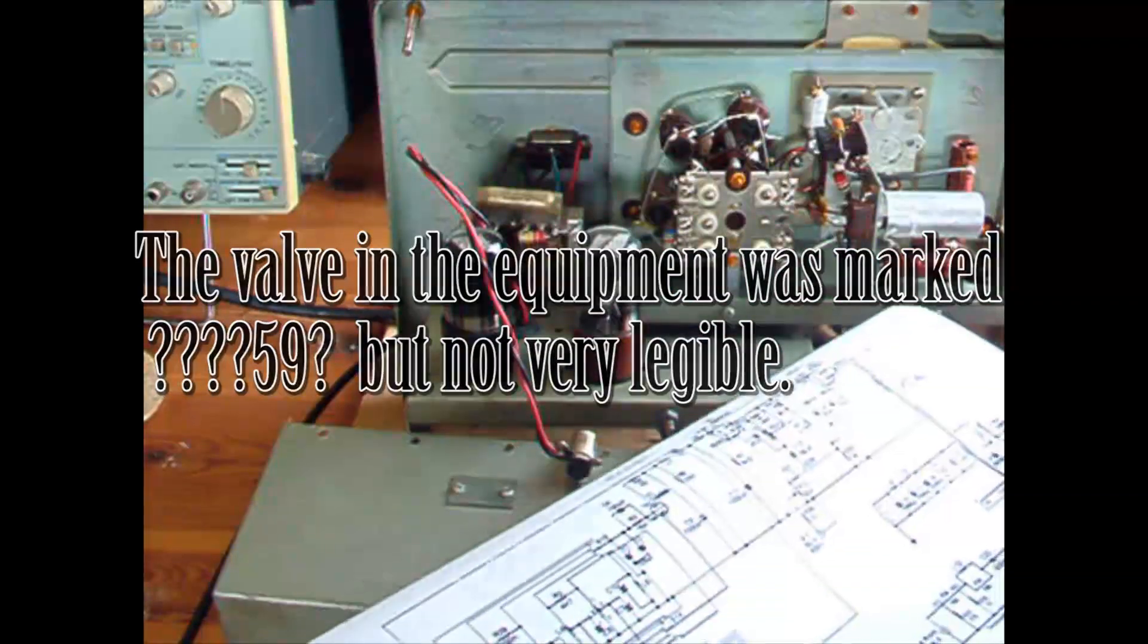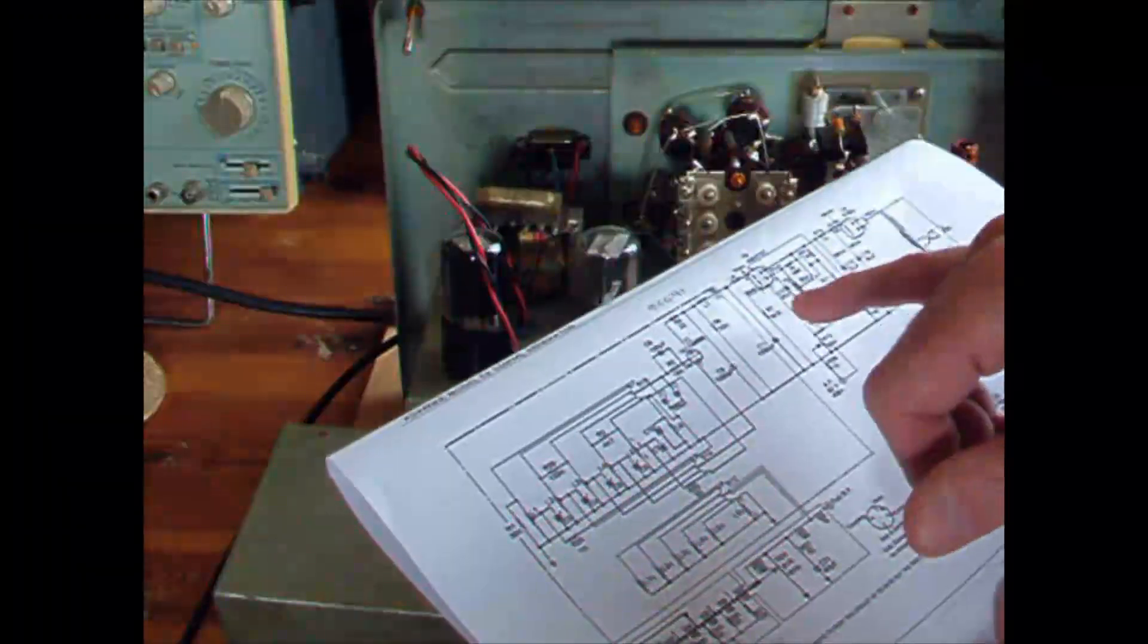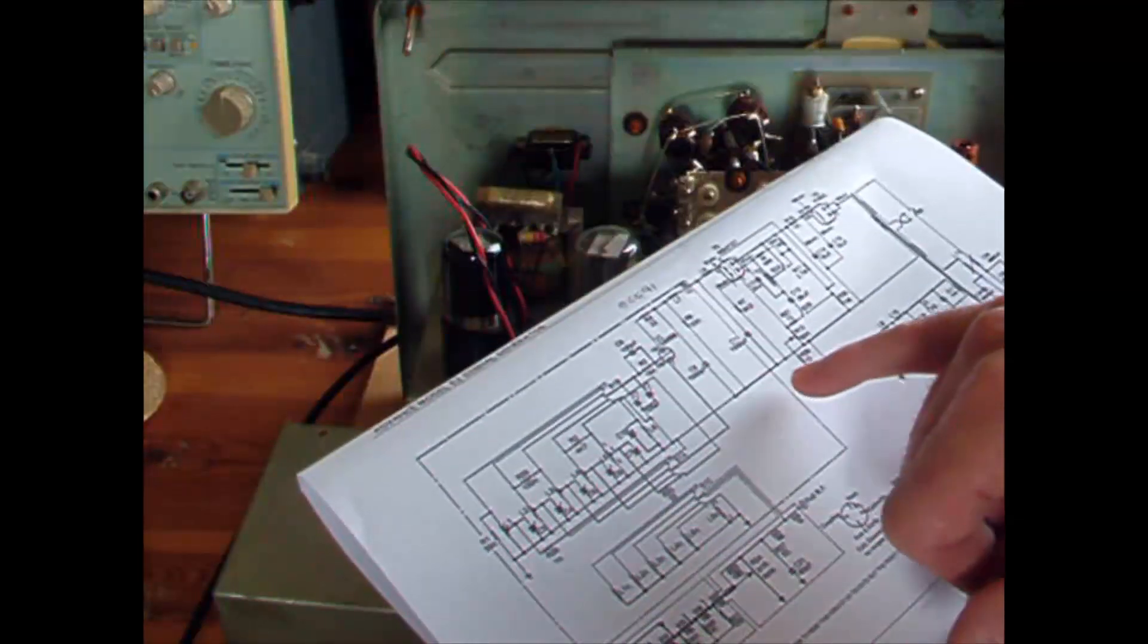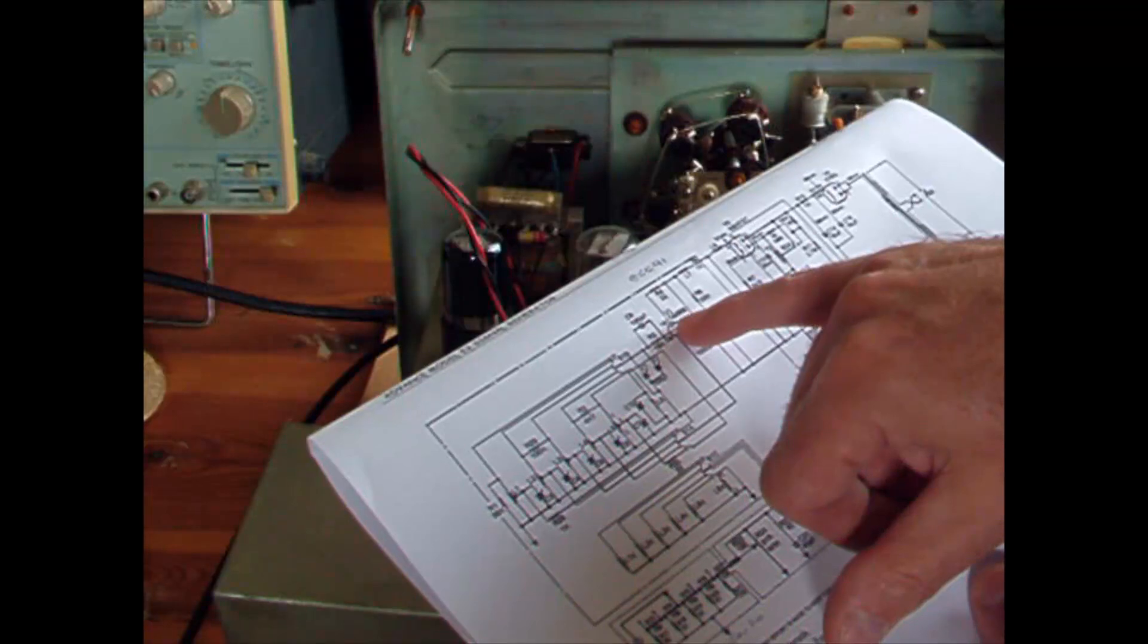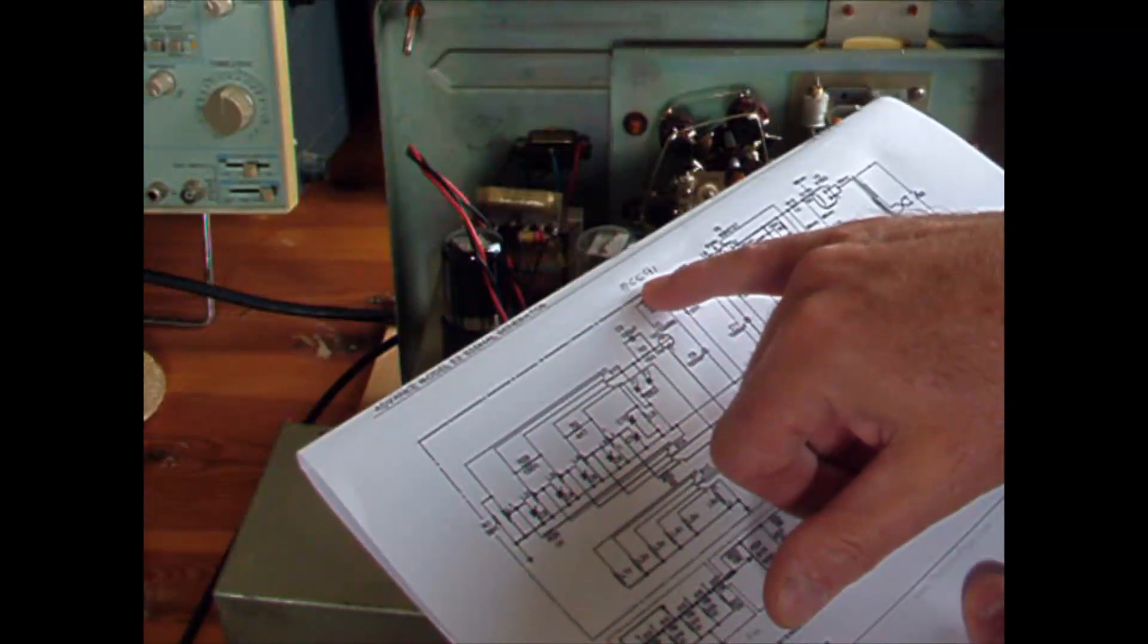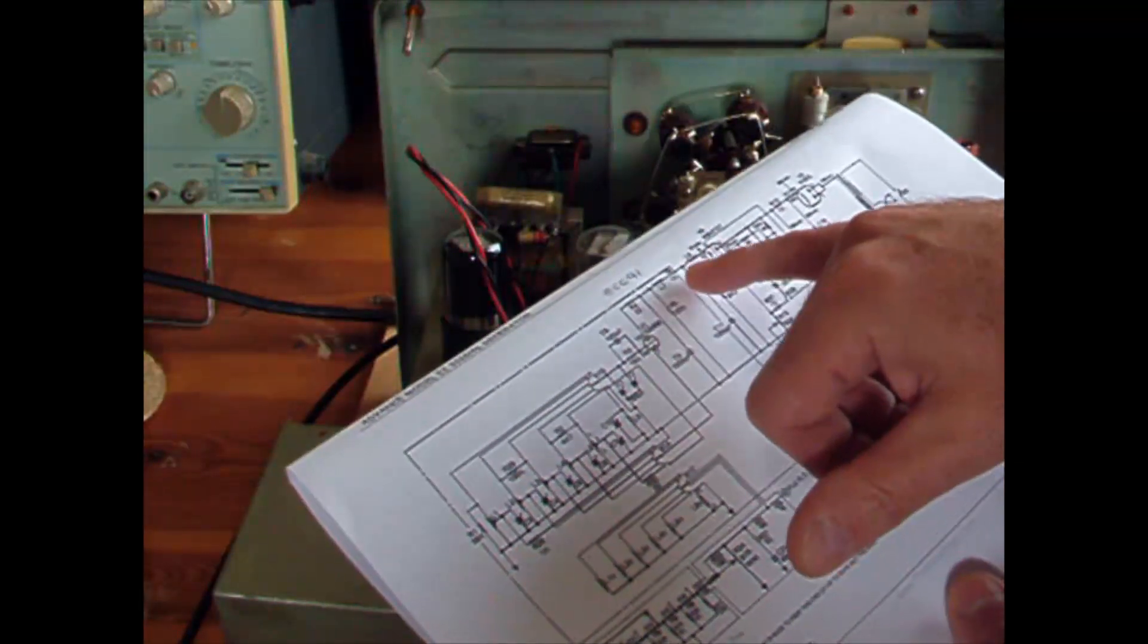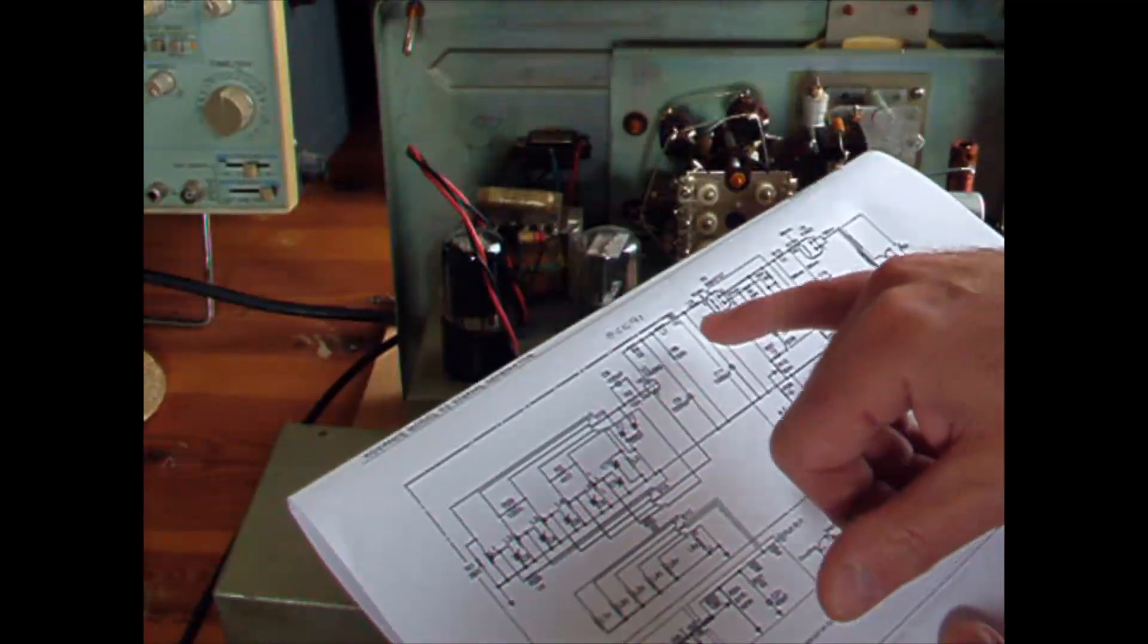So I started looking a bit deeper. And then I actually found out that the circuit diagram has been redrawn, and unfortunately it's got the wrong valve in it. Where it says it's an ECC-82, in actual fact it's an ECC-91. They're actually different valve sizes. But that led me on a dance.